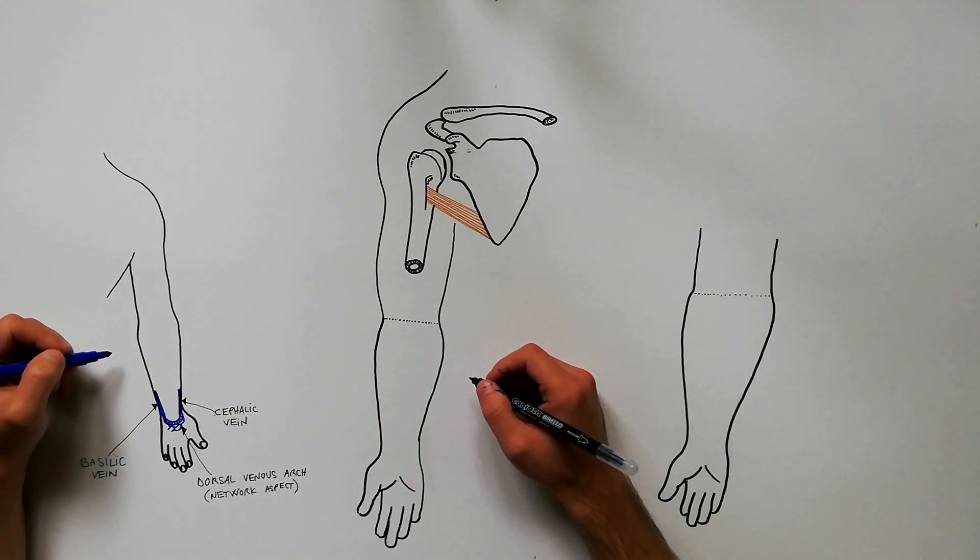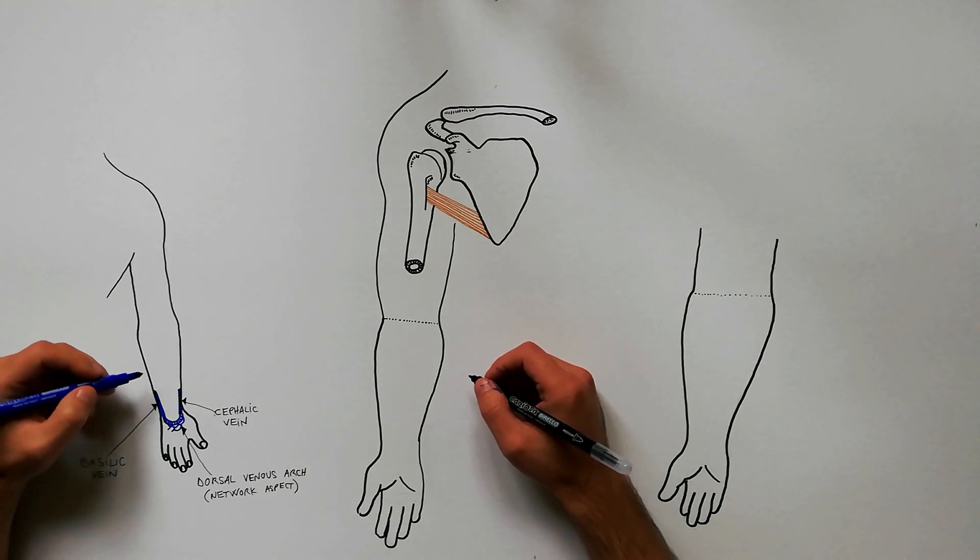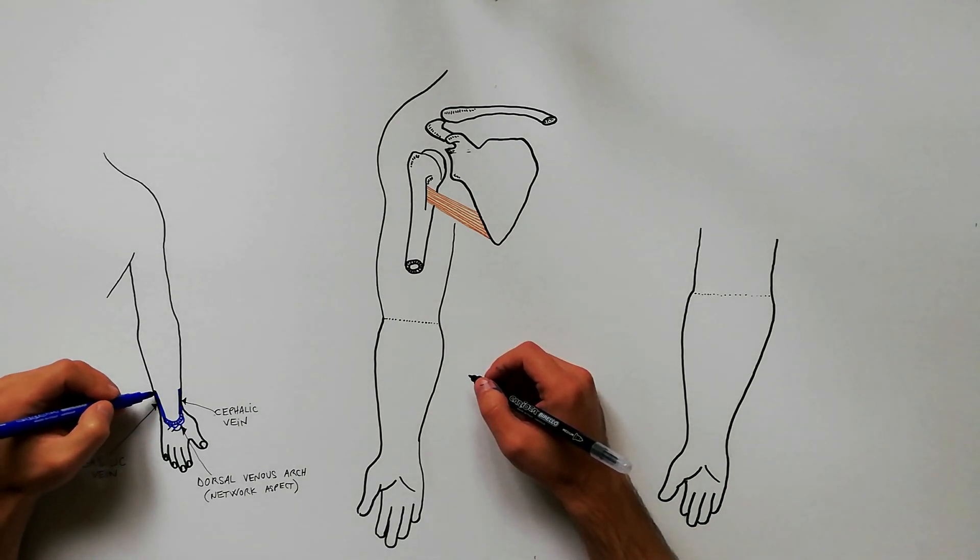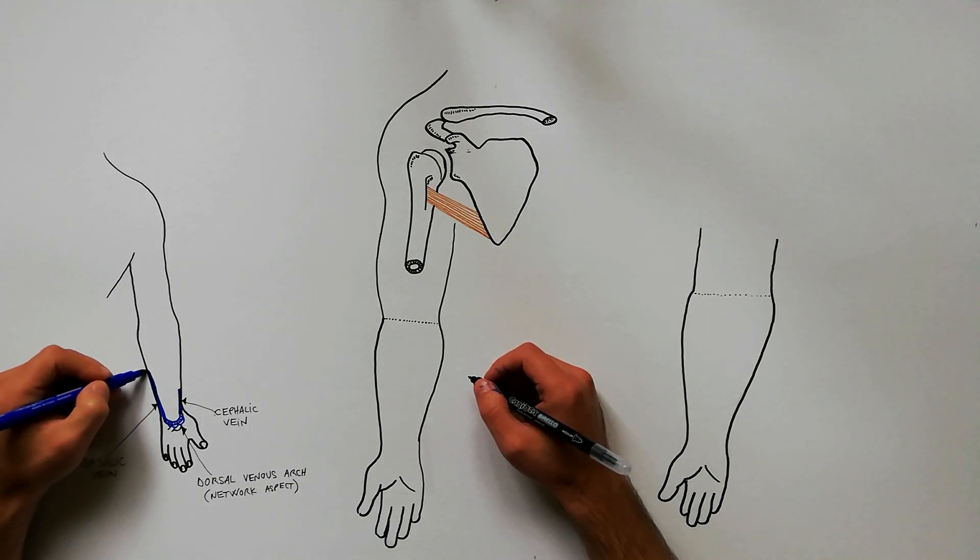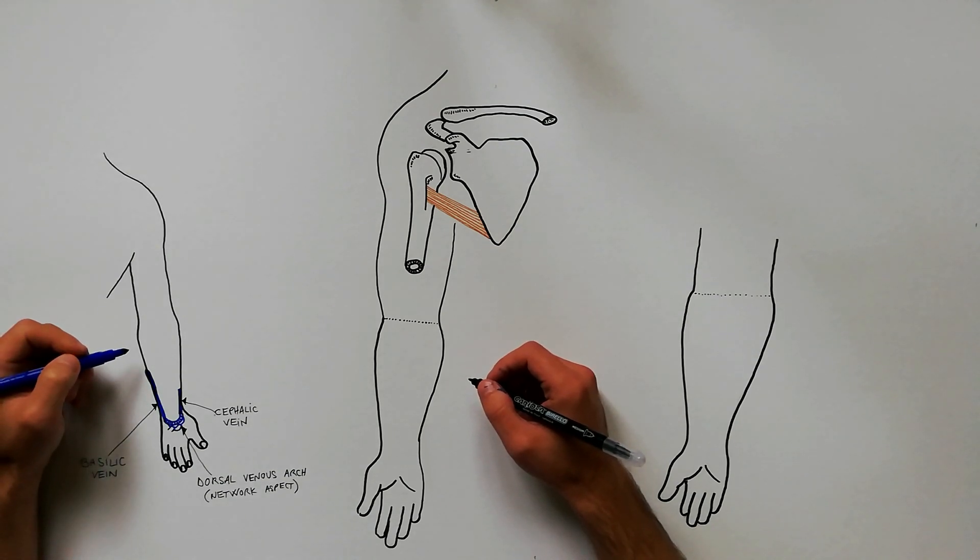First, we will discuss the basilic vein. The basilic vein begins as the continuation of the medial end of the dorsal venous arch of the hand. It runs upwards along the back of the medial border of the forearm.